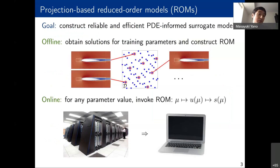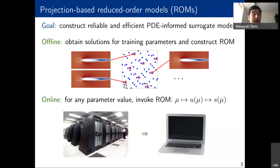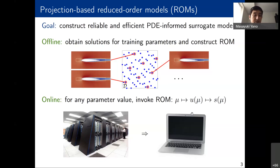One way to accelerate many-query problems is to use surrogate models. Our goal is to construct reliable and efficient PDE-informed surrogate models. One such method is projection-based reduced-order models, or ROMs. In the offline stage, we obtain solutions for training parameters and construct a surrogate model by sampling the parameter space. In the online stage, we can invoke that ROM for any parameter values, even those not in the training set — reducing simulations that might require a supercomputer to something runnable on a laptop.